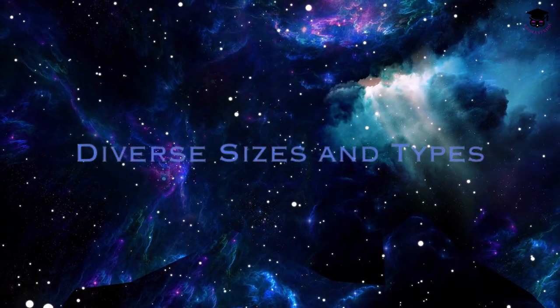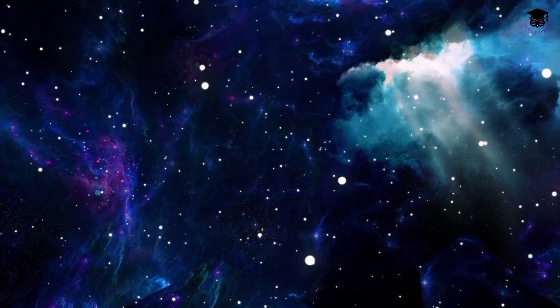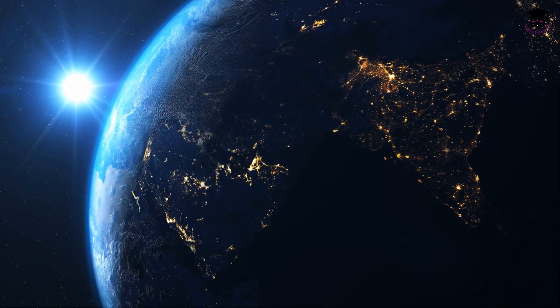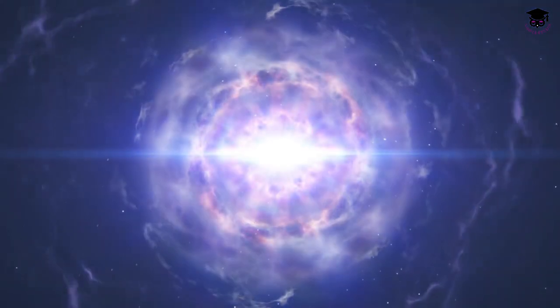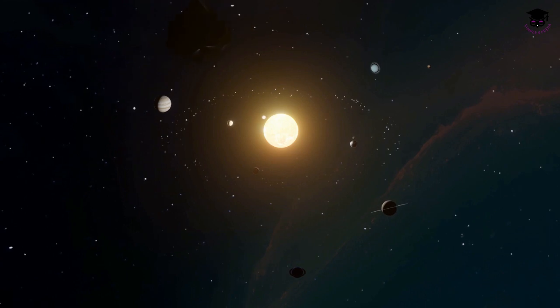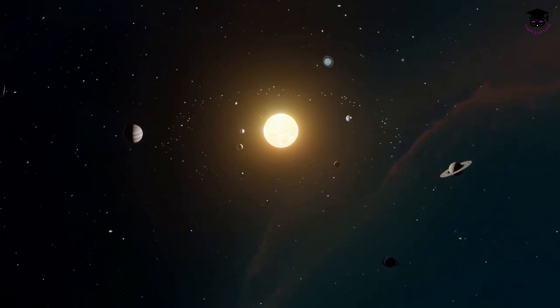Diverse sizes and types: stars come in a wide range of sizes, from dwarfs smaller than Earth to supergiants hundreds of times larger than the Sun. This diversity leads to various types of stars, including main sequence stars like our Sun, red giants, white dwarfs, neutron stars, and even black holes.